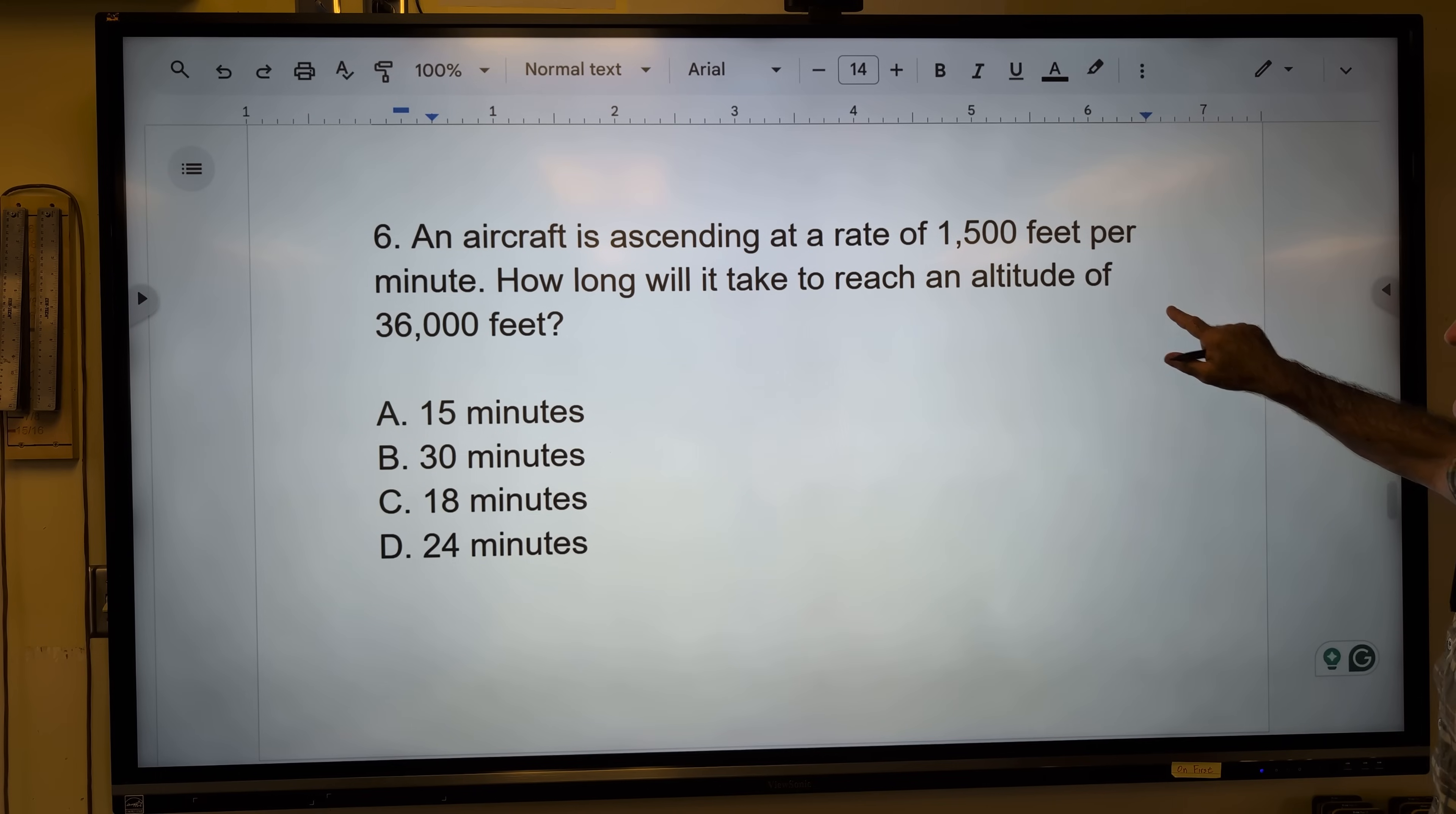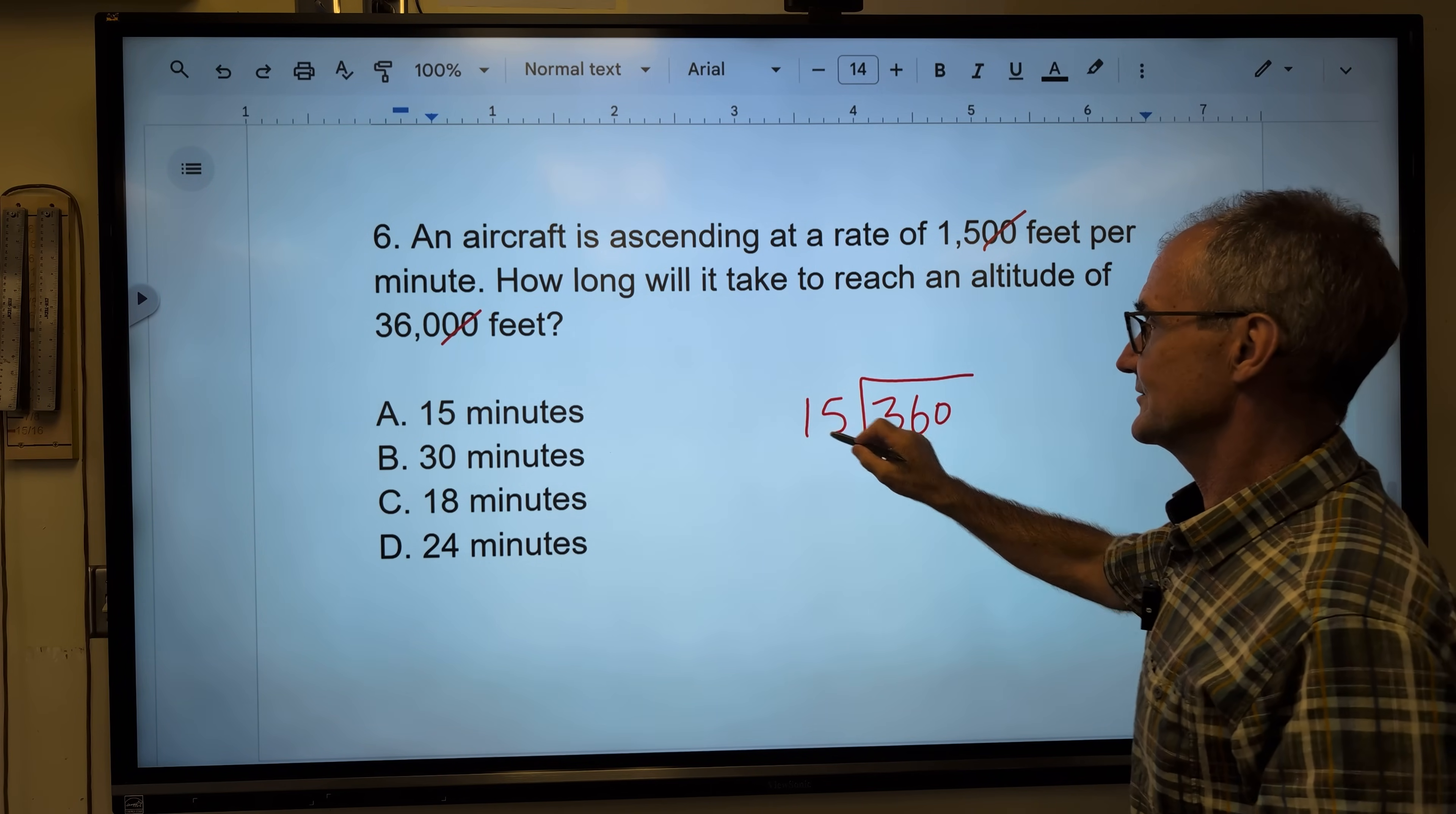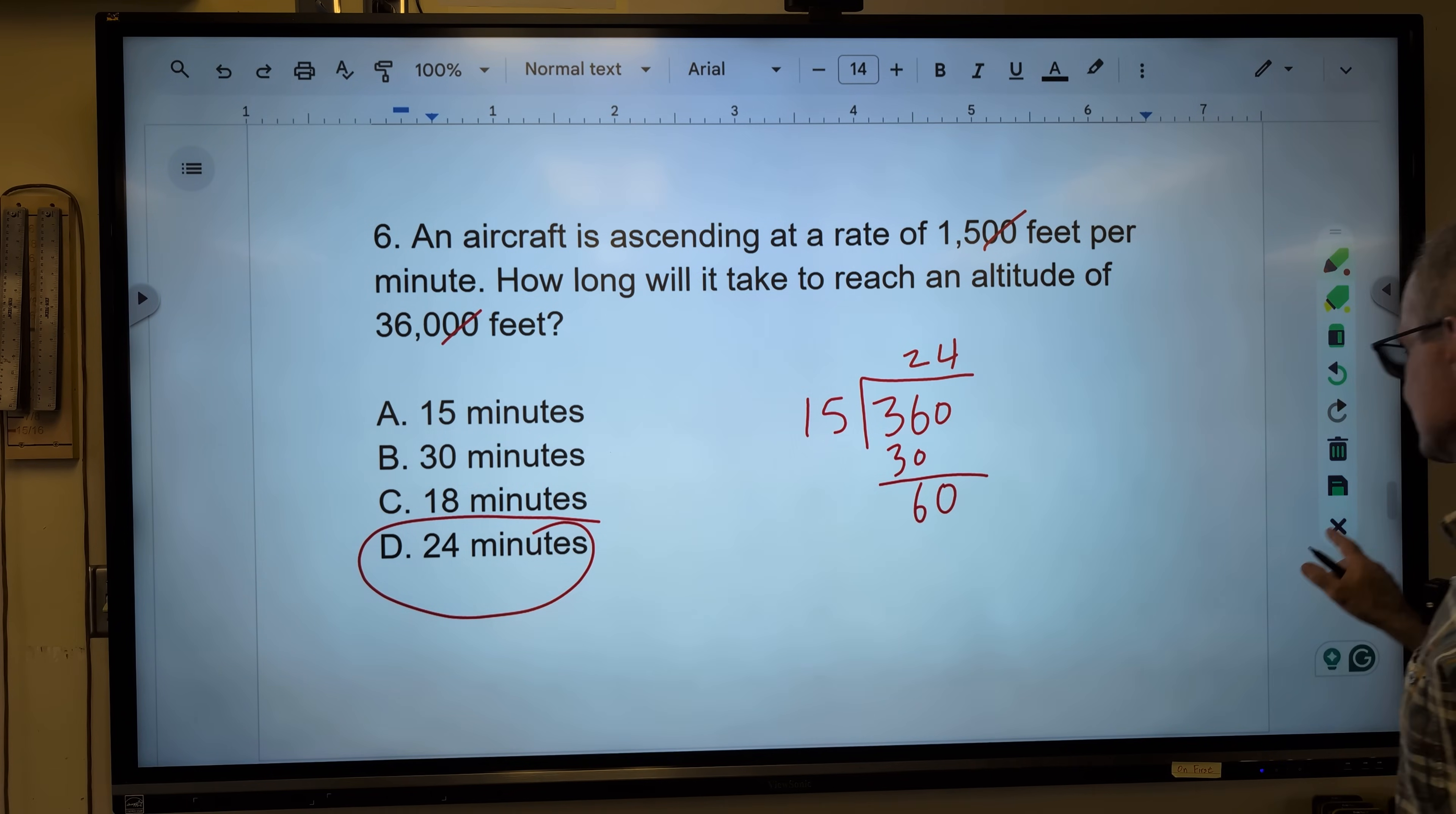Number six. An aircraft is ascending at 1,500 feet per minute. How long will it take to reach an altitude of 36,000 feet? Well, I got feet divided by feet. My answer should all be minutes. First thing I'm going to do is just drop two zeros off of there and off of there. So now I want to know how many times does 15 go into 36? 15 goes into 36 twice to give me 30. There's only one answer up there. It starts with a 2. It has to be answer D. I'll finish the division here. 36 minus 30 is 6, 0. 15 into 60 is 4. Correct answer, 24 minutes right there. So a lot of these are just time-saving techniques as well.